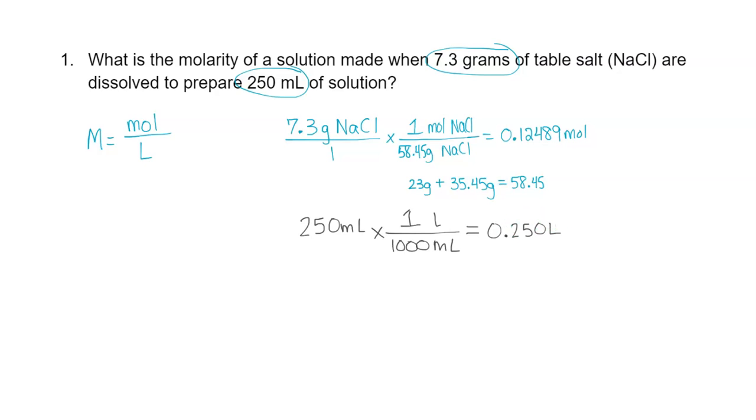So we have our number of moles, we have our number of liters, all that's left is to substitute these values into our molarity equation. Our molarity equals 0.12489 moles divided by 0.250 liters. Moles divided by liters. If we divide this out, 0.12489 divided by 0.25 gives me 0.49956, and that will be our molarity of this solution.